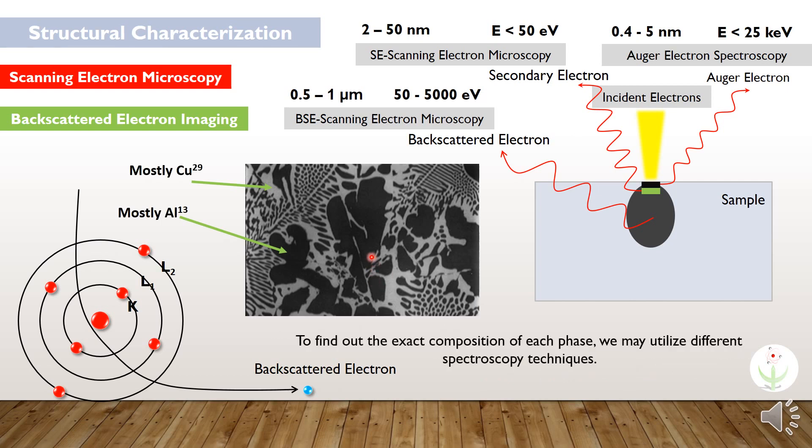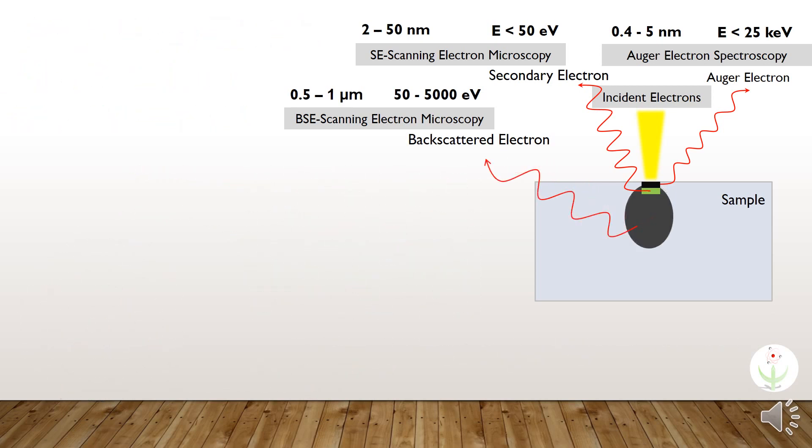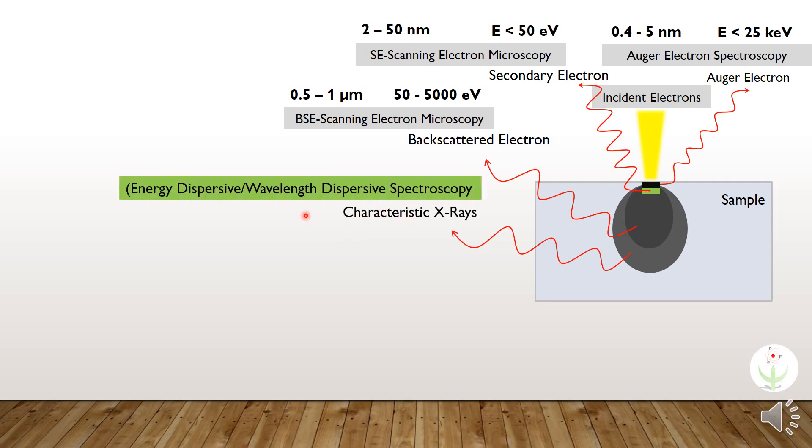To find out the exact composition of each phase at this microscopic level, we may utilize different spectroscopy techniques like energy dispersive spectroscopy or wavelength dispersive spectroscopy. Those spectroscopy techniques and many other spectroscopy techniques will be discussed in the next part.